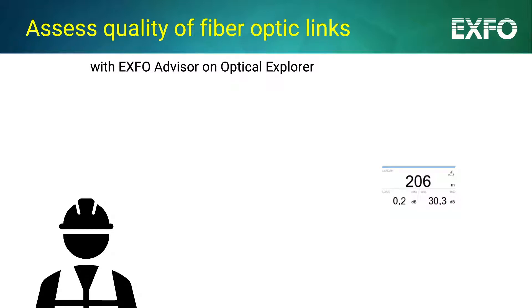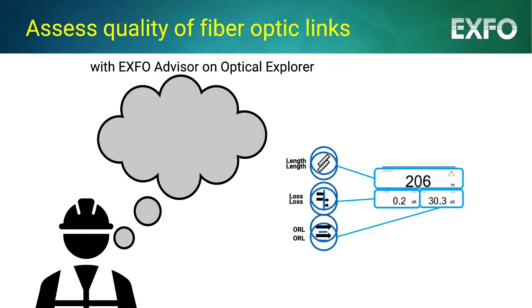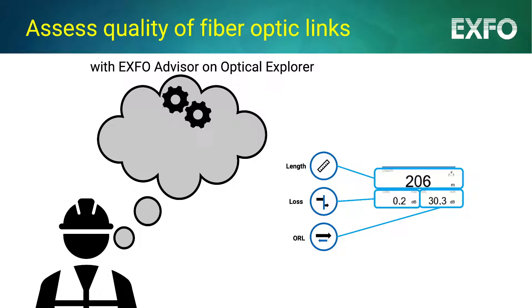To assess the quality of a link, seasoned fiber optic technicians can read the link's key performance indicators, or KPIs, which are length, loss, and optical return loss. And from these values, interpret on their own how the link compares to an ideal installation.